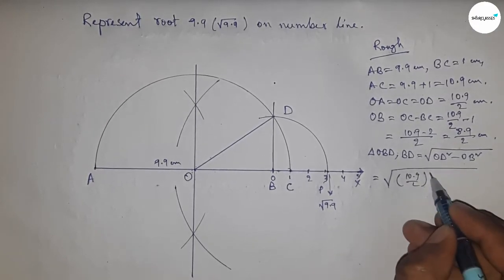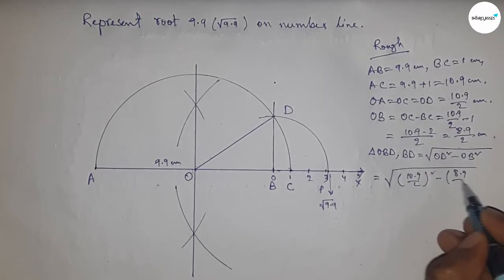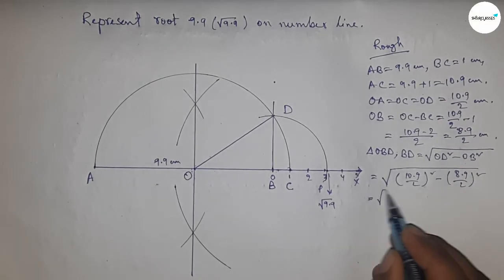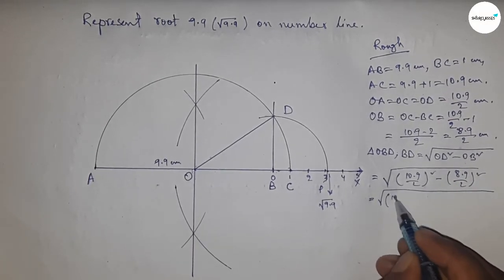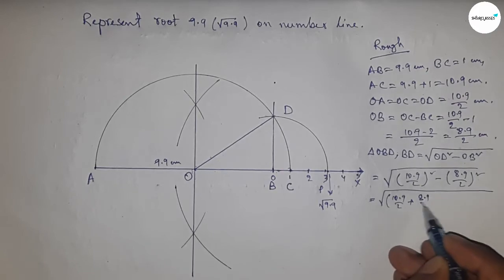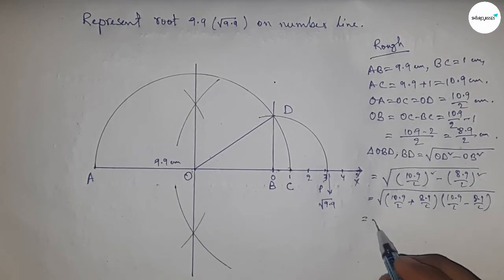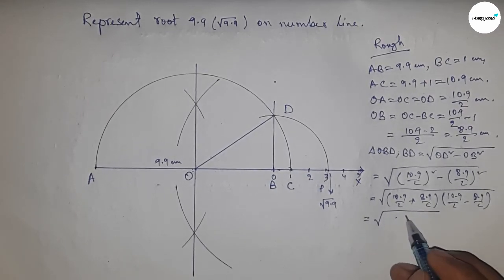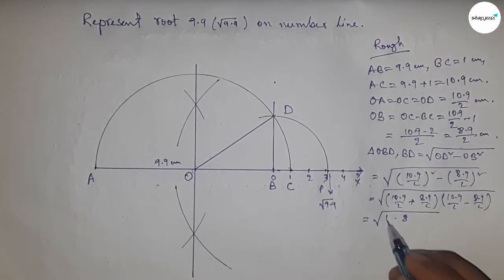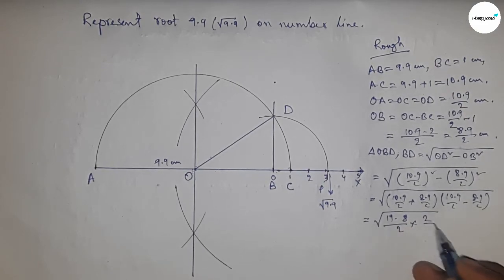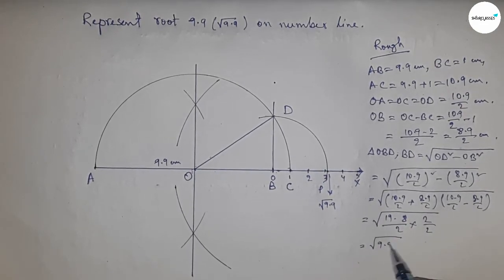Next I'm going to use a formula: a square minus b square equal to a plus b times a minus b. So applying the formula, this is 0.8 and this is 19.8 by 2 into 2 by 2, so this is 9.9 into 1, so root 9.9 centimeter.